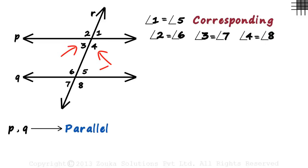Angles three, four, five, and six are interior angles because they are between the two parallel lines. And they are classified into two types. Let's understand the first type.